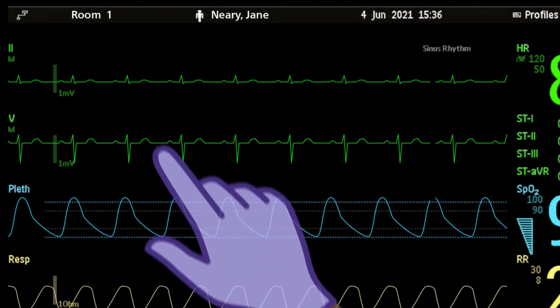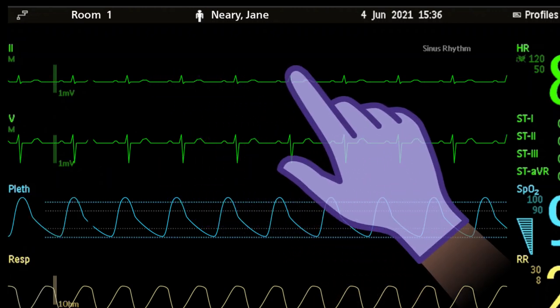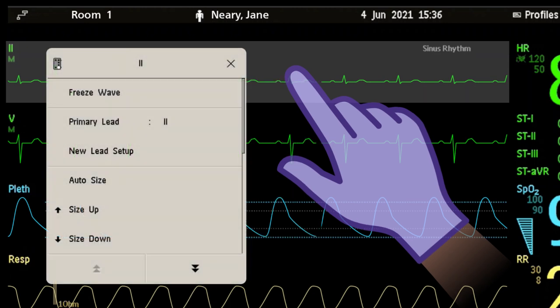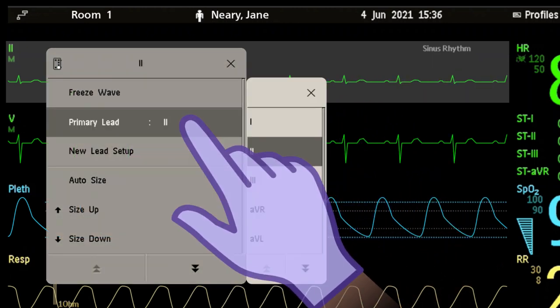If you determine the selected ECG lead is not adequate for arrhythmia detection, select the ECG wave to change the lead. In the setup window that opens, select the lead you would like to change. Then select an appropriate lead from the submenu.